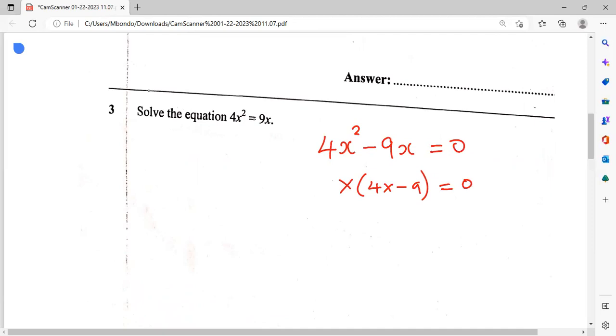Then we equate each of these factors to zero, so we're going to have x is equals to zero or 4x minus 9 is equals to zero. X is equals to zero or, then when you work out this one, what is it going to be? It will be 4x is equals to 9.